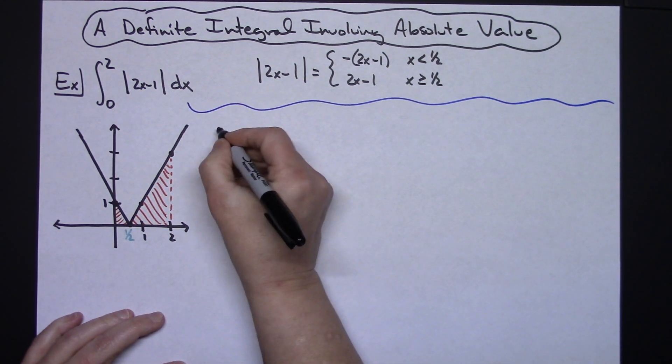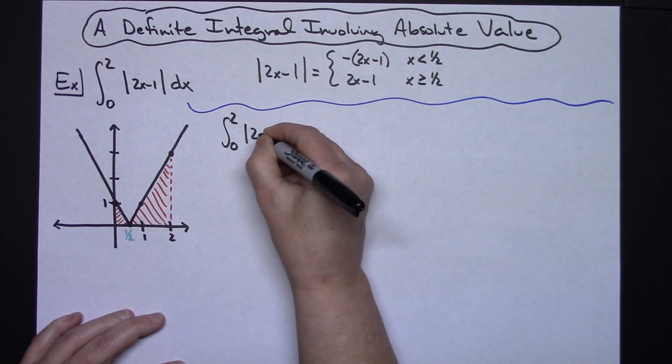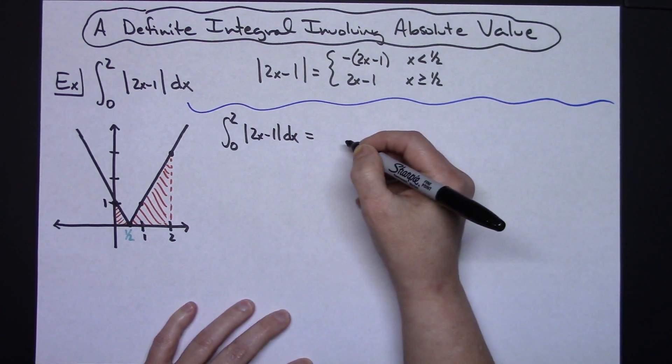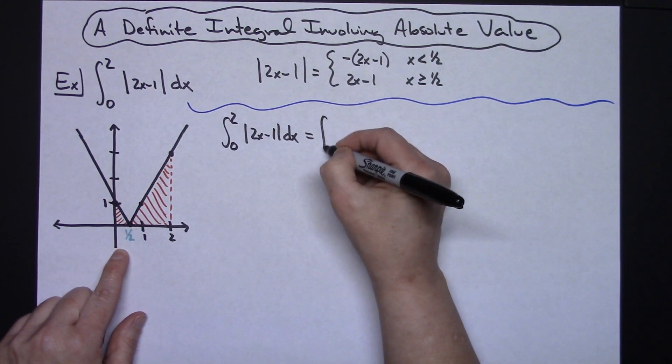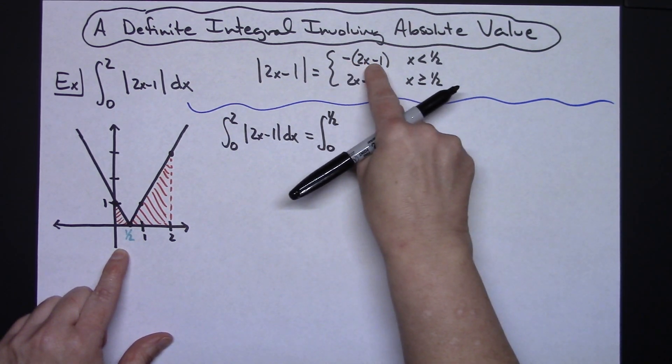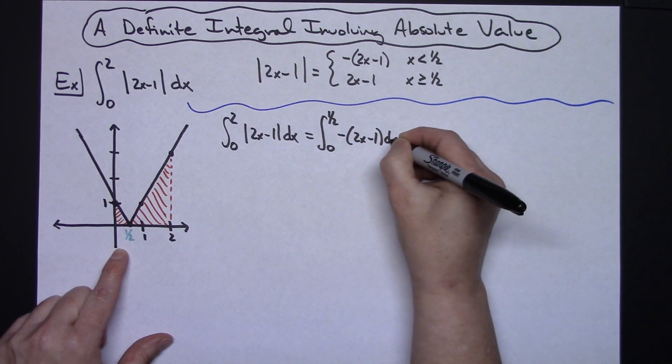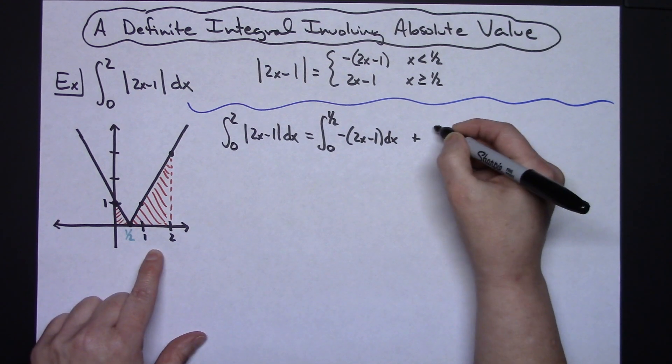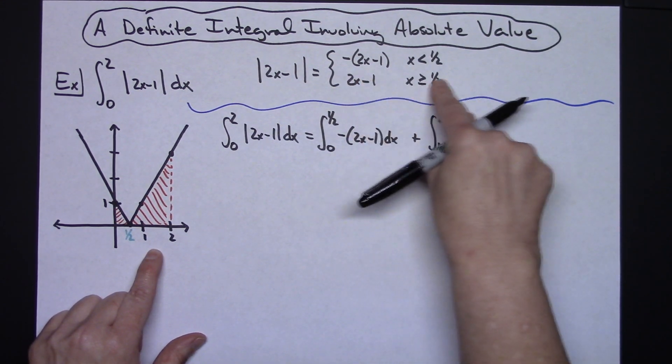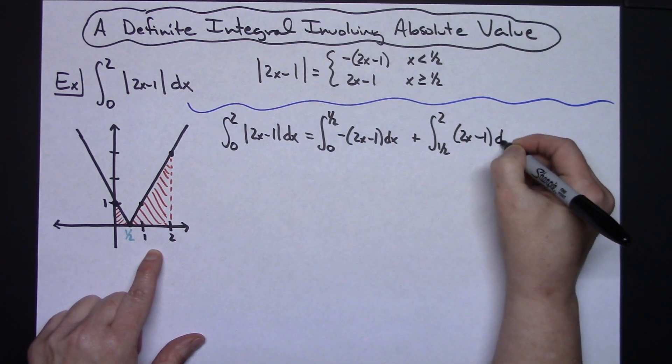The integral from 0 to 2 absolute value 2x minus 1 dx can be found by integrating from 0 to 1 half of negative 2x minus 1 dx and then adding to that the integral from 1 half to 2 of 2x minus 1 dx.